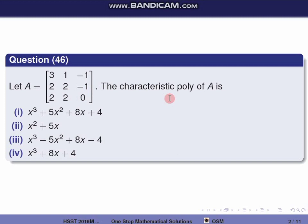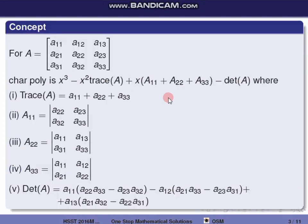First, we use the concept of cofactors. For a 3×3 matrix A with entries A11, A12, A13, A21, A22, A23, A31, A32, A33, we define the cofactors.